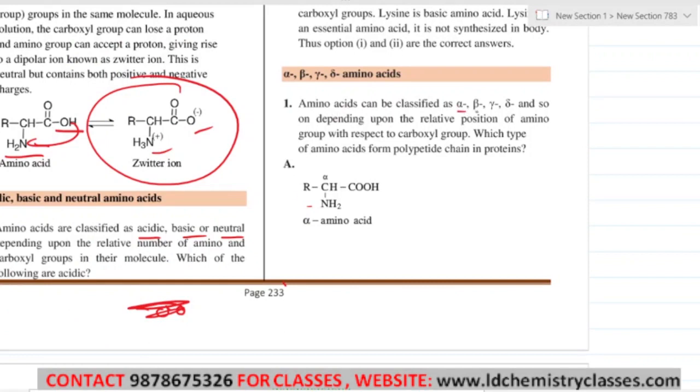Amino acids can be classified as alpha, beta, gamma, delta and so on, depending upon the relative position of the amino group with respect to the carboxyl group. Which of the following amino acids form polypeptide chains in proteins?